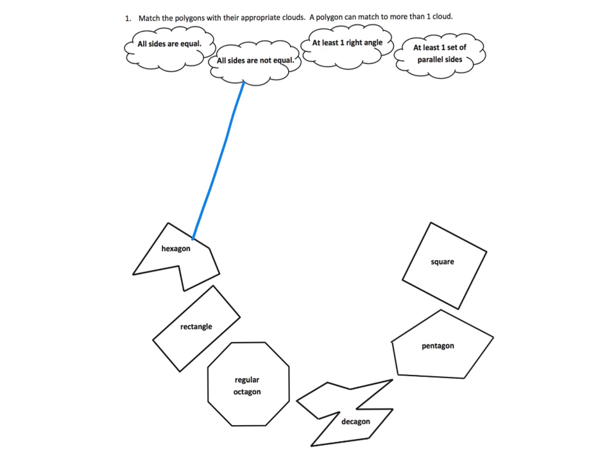What I might do is start with the hexagon and say, well, which of these characteristics can I make connections to? Then go to the rectangle and which characteristics can I make connections to, and so on. So let's start with the hexagon. Are all sides equal? Well, not on this hexagon, so we're not going to make a connection. Are all sides not equal? Yeah, it kind of looks like all sides are not equal, so I'm going to make a connection there.